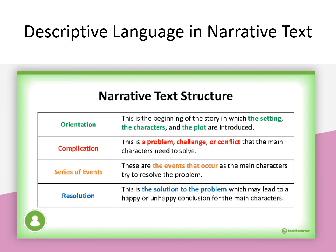In the narrative text structure, we need to look at the following. First, you start with the orientation — this is the beginning of the story in which the setting, the characters, and the plot are introduced. After that follows the complication — this is a problem, challenge, or conflict the main characters need to solve. Then comes the series of events — these are the events that occur as the main characters try to resolve the problem. Finally, the resolution is the solution to the problem, which may lead to a happy or unhappy conclusion for the main characters.